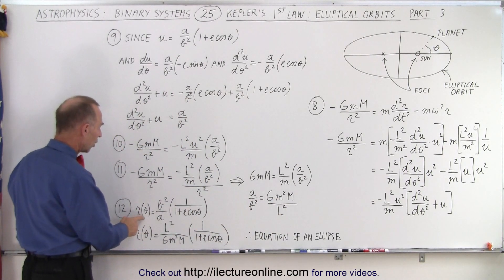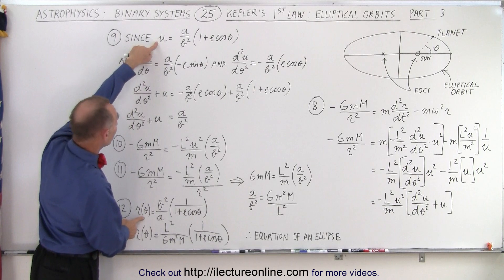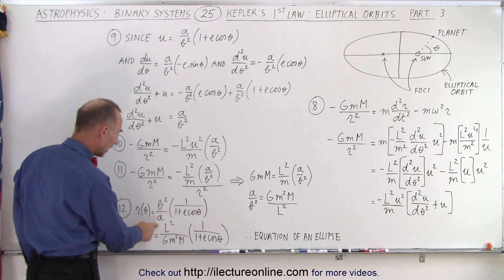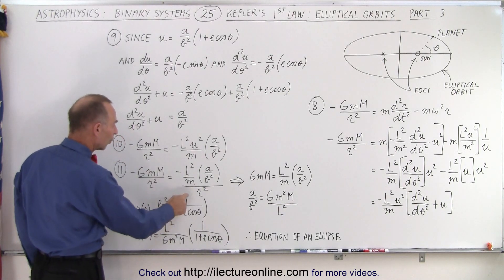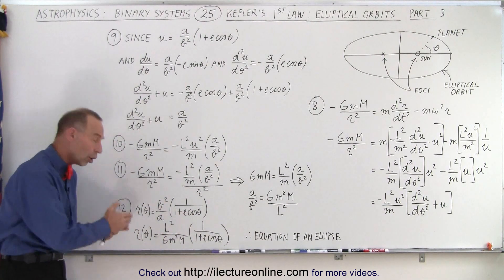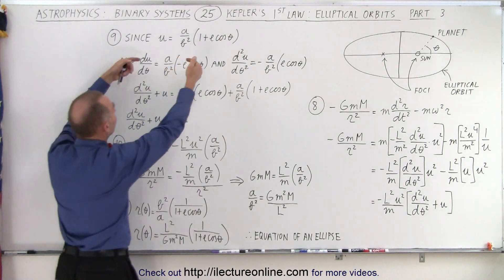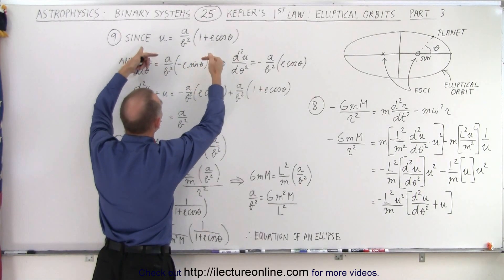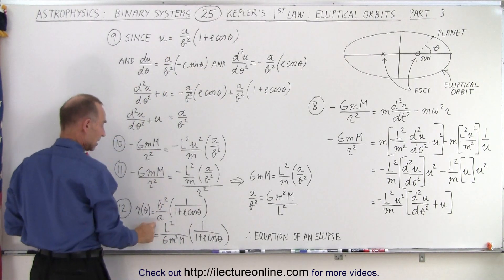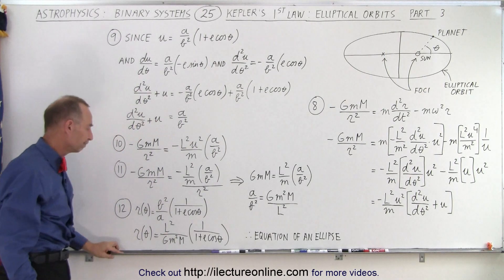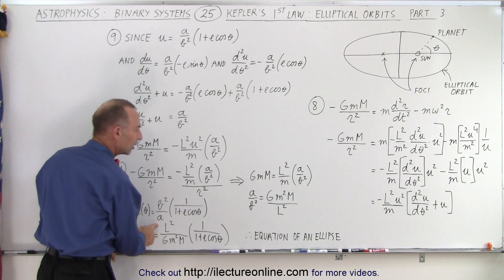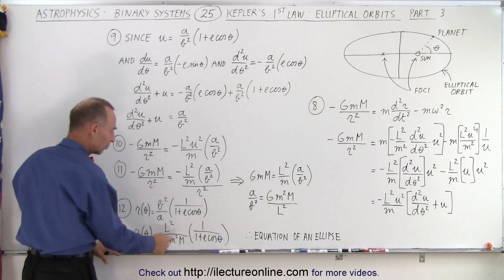Now, instead of u, we want r, so we take the inverse. Instead of a over b squared, we have b squared over a times 1 over (1 plus e times cosine of theta), because we have to take the inverse, since we solved back for r instead of u. Since u equals 1 over r, r equals 1 over u, so we end up with b squared over a times 1 over (1 plus e cosine theta). And we realize that b squared over a is essentially equal to l squared over (G m squared big M).